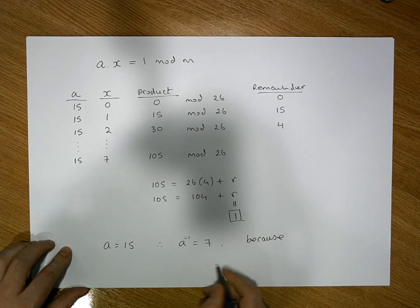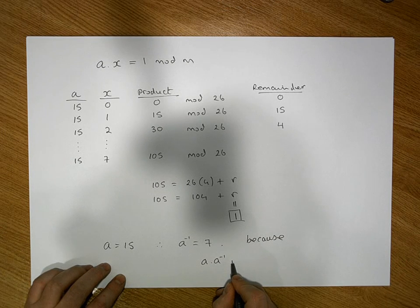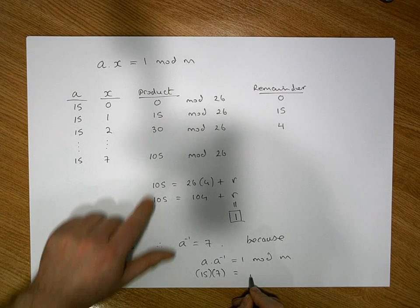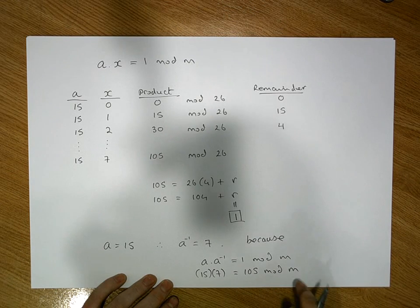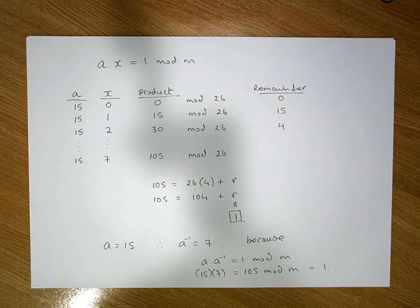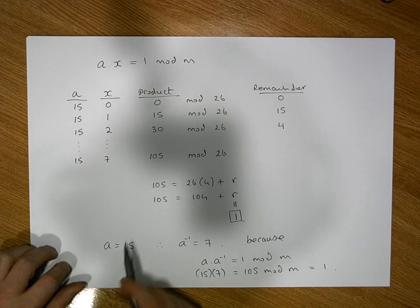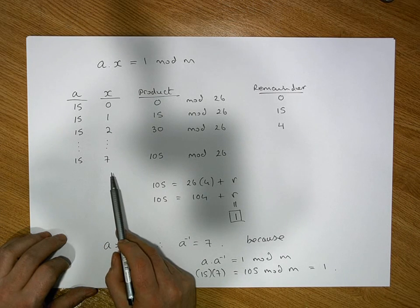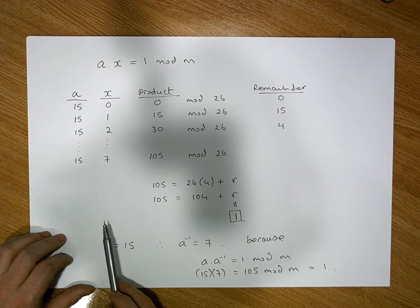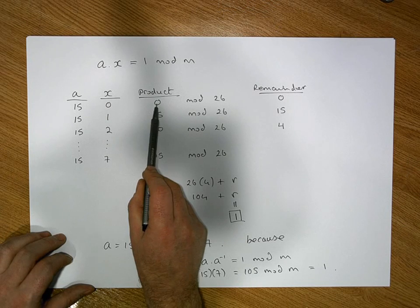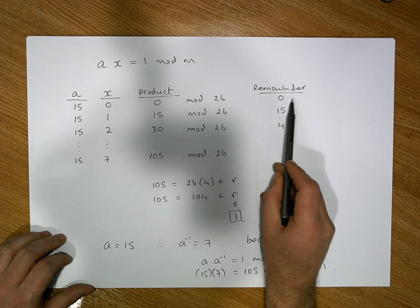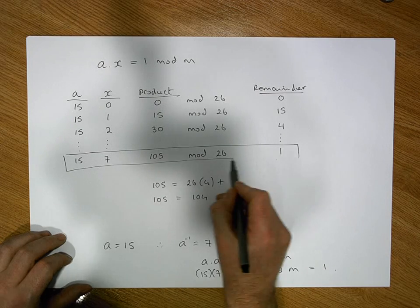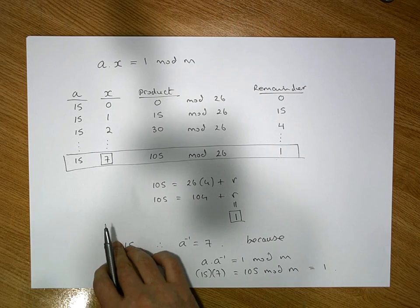Because a times a-inverse equals 1 modulo m, we have 15 times 7 equals 105, and 105 modulo 26 gives a remainder of 1. So now we know a-inverse. It was a little complicated, but the key point is: we hold a constant and go through all possible candidate values of x — 0, 1, 2, 3, ... up to 25 — until we find a pairing where the product modulo the size of our alphabet gives a remainder of 1. In this case, our inverse is 7.